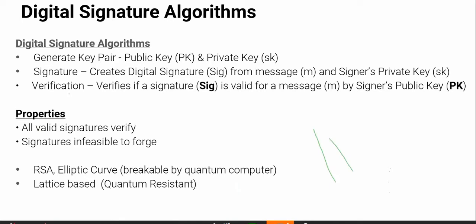In digital signature, you create a signature by using your private key to sign the message, and verification is done when someone receives it — they use the signer's public key to verify. Two important properties: first, a valid signature will always verify, meaning if indeed the signer used their private key to sign, the public key can verify it. Second, the signature is infeasible to forge — meaning someone else, say John, cannot use his own private key to sign such that the recipient can verify it using Alice's public key. That is not allowed under a valid digital signature scheme.